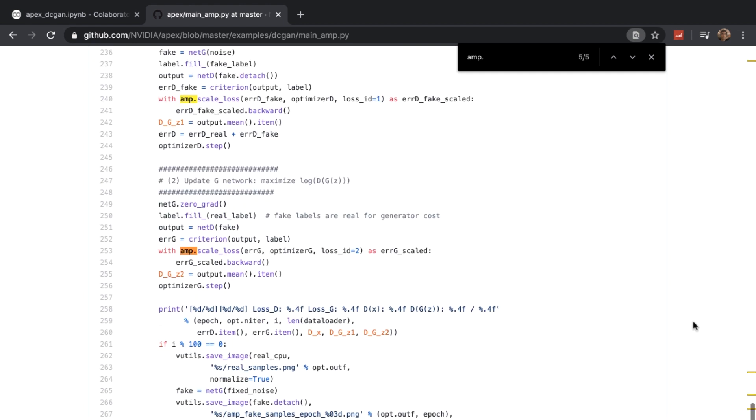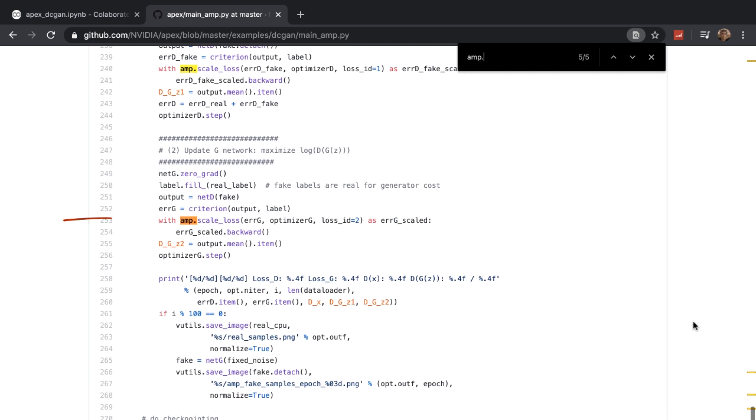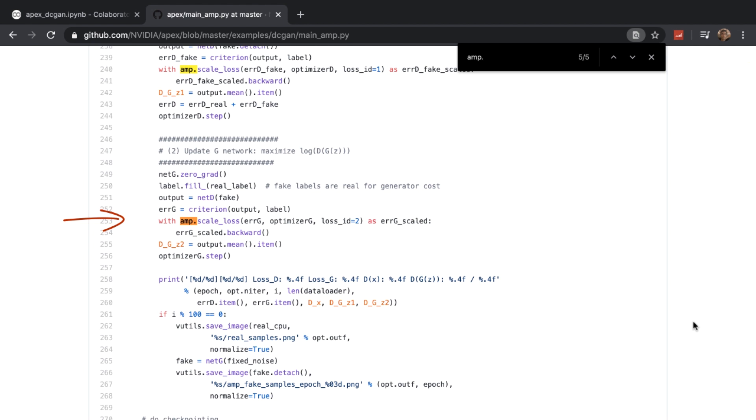Now the third loss is the generator loss. Compute the loss error_G, scale it, then execute the back propagation step. For every 100 iterations, we show the logs, and we save the real samples from the dataset, and save a set of images that were generated by the generator.